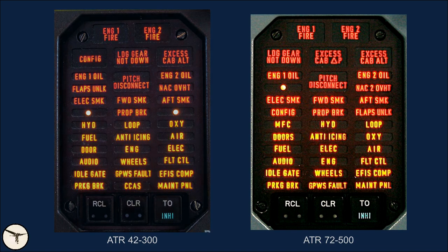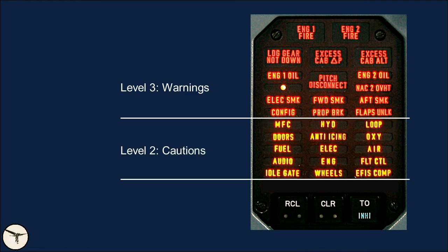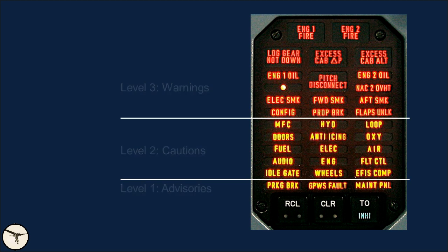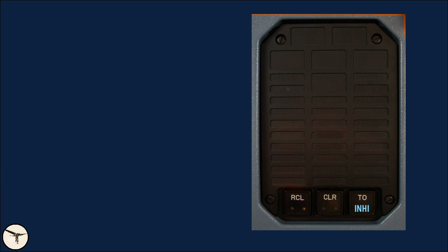There are three levels of alerts. Level 3 are red warnings, such as fire and smoke. Level 2 are amber cautions, such as failures to hydraulic or electrical systems. Level 1 are amber advisories, for example to inform you that the parking brake is on. The clear push button is used to remove all level 2 captions. The recall push button reactivates all active cautions that were removed with the clear push button. The takeoff inhibit push button is pressed before takeoff and inhibits several alerts that might distract the pilots during takeoff. A blue takeoff inhibit light is then illuminated. The takeoff inhibit is disengaged when the landing gear is selected up or when you press the recall push button.